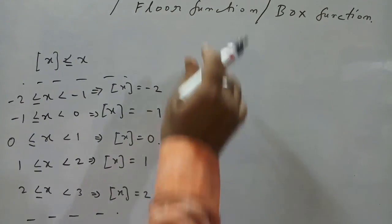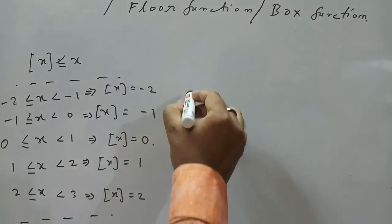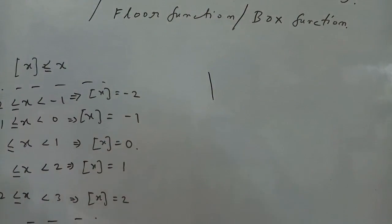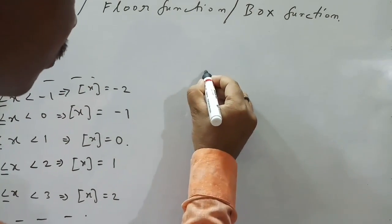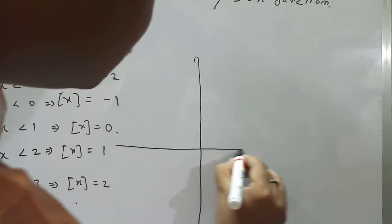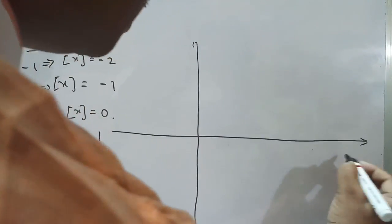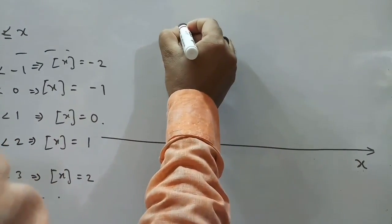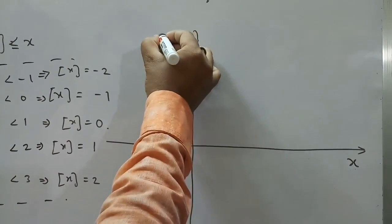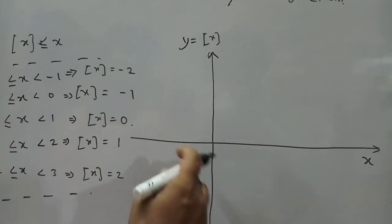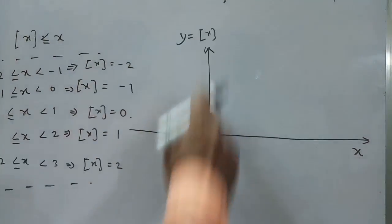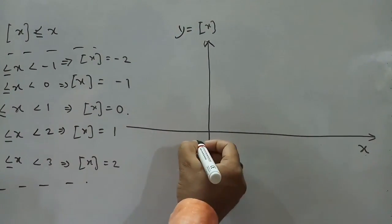For drawing the graph of the Box Function, this is your X-axis and this is your Box[X] function — that is Y = Box[X]. This is your independent variable axis, and this is your dependent variable axis, with values of Box[X] along the Y-axis. This is your origin.